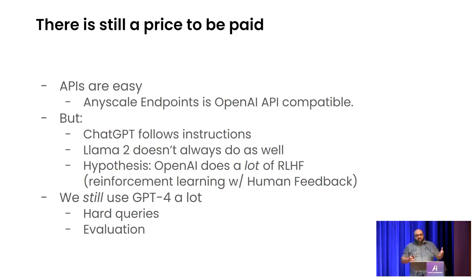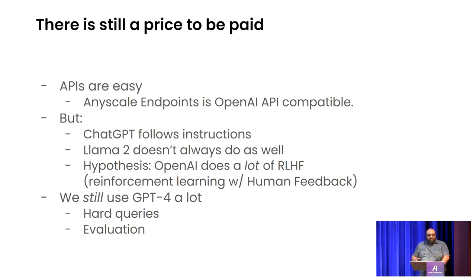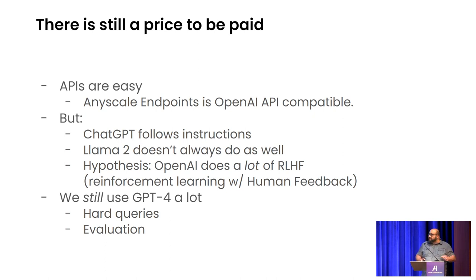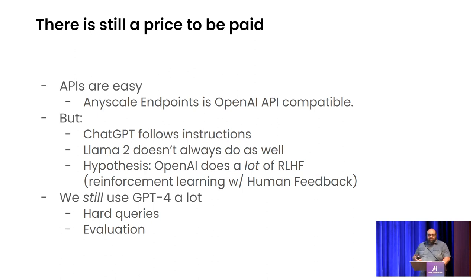You might think after hearing this that it's all sunshine and rainbows and you should use open source models for everything. But that's not the reality. The problem isn't the APIs — all the companies providing open source interfaces now offer an OpenAI-compatible API. It takes about five seconds to move from GPT-4 to Llama 2; you just change a few environment variables and the model name. But a few things crop up: ChatGPT is really good at following instructions — it does what you tell it to do. Llama 2, in my experience, is not very good at following instructions.